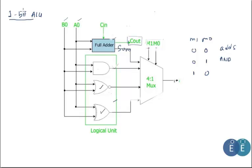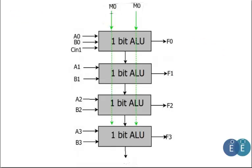To clarify: the arithmetic unit is more than just an adder — we'll cover that shortly. The key idea is that a simple arithmetic unit and a logical unit, with operations selected via multiplexer selection lines, form a one-bit ALU. Multiple such units can be combined into a four-bit or eight-bit ALU.